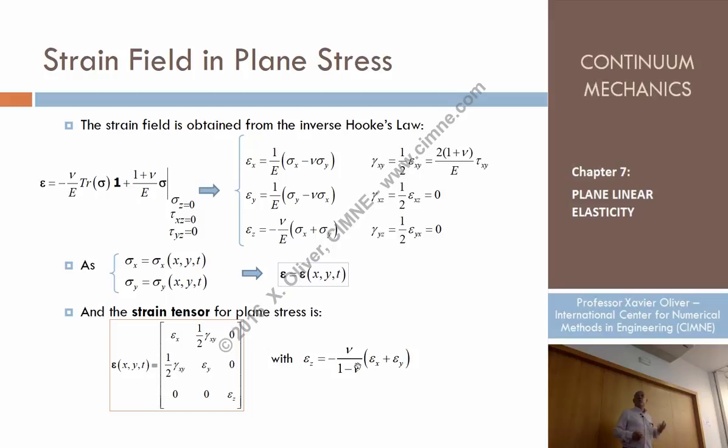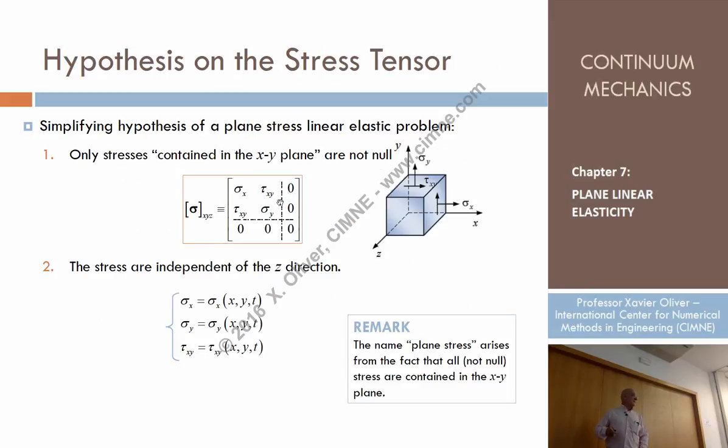So what happens here is that the strains are not zero. Epsilon x is not zero. Epsilon y is not zero. Epsilon z is not zero, but it can be, it's not an unknown so to speak. Why? Because it can be directly computed in terms of epsilon x and epsilon y. And these shear strains are zero because so are the corresponding shear stresses. Look at the aspect of the stress tensor. Zero, zero, zero, zero, zero here, only relevant the ones in the plane xy.